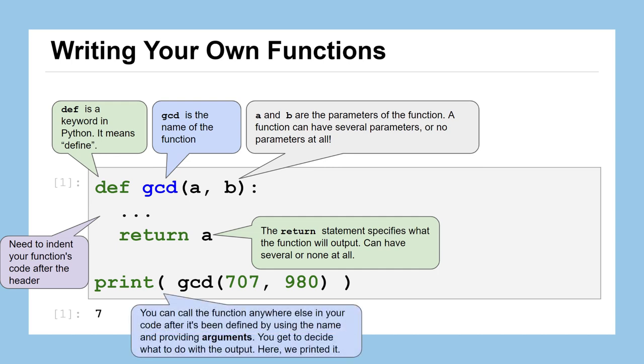Lastly, you can call your function from anywhere else in your code after it's been defined. You just use the name GCD and you pass it some arguments to go to the parameters. So the arguments are the actual values like 707 and 980, and they get passed to the parameters A and B. And then we get to decide what to do with the output. So we know we're going to return the value A from the function. We've chosen to put that call to the GCD function inside a call to the print function. So whatever comes out of the GCD function will be printed. But we could have just as easily taken that GCD and multiplied it by 5 or assigned its value to a variable. We get to decide once the function returns the value, what do we do with it?